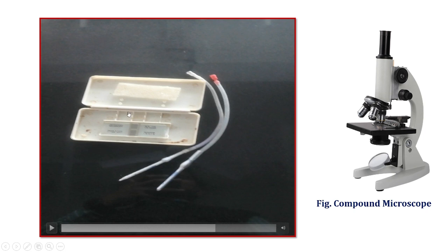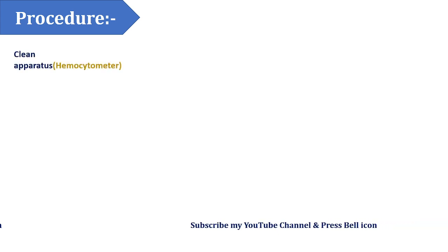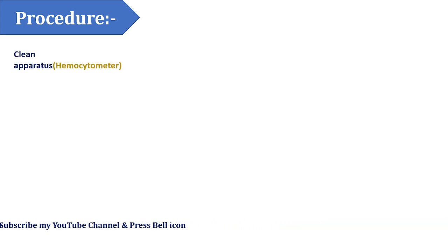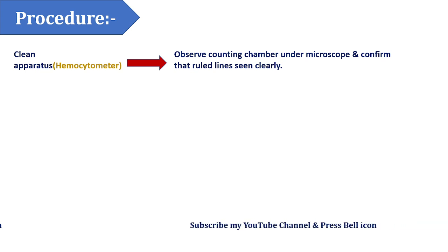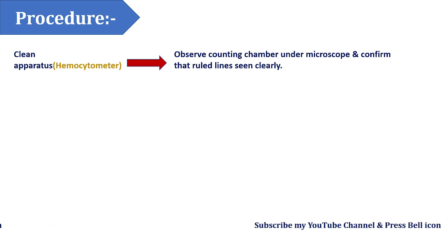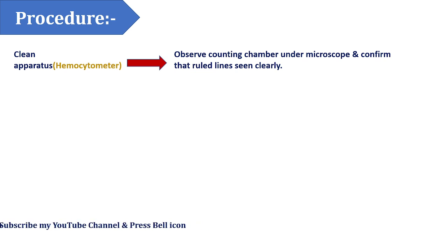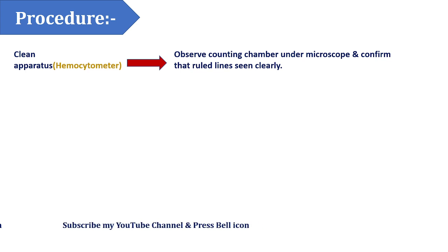Along with the hemocytometer, you will also need a compound microscope. For the procedure: first, clean the apparatus as per requirements. After cleaning, observe the Neubauer chamber under the microscope to clearly focus on the square sections. Adjust the microscope's light and mechanical stage. The next step is to take 2 ml of RBC diluting fluid in a wash glass.